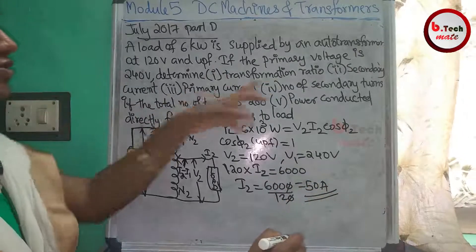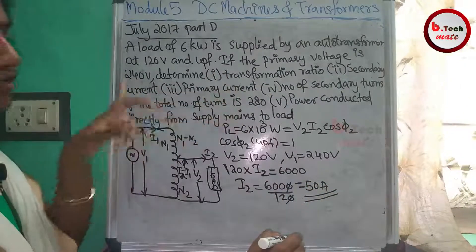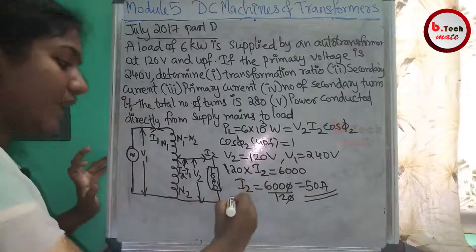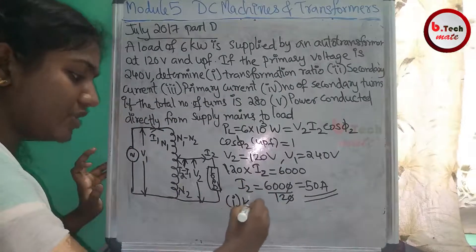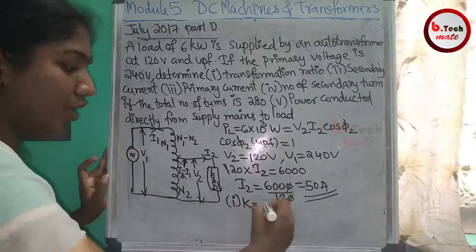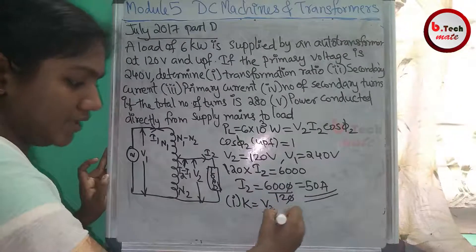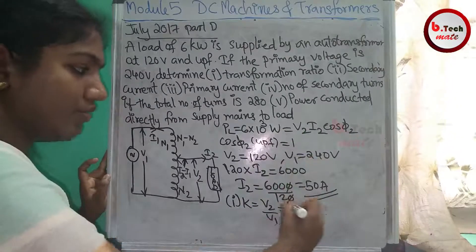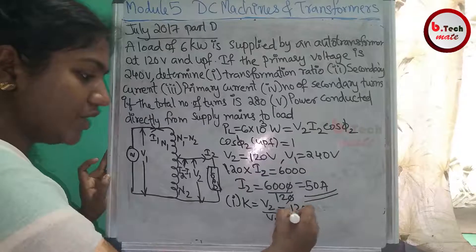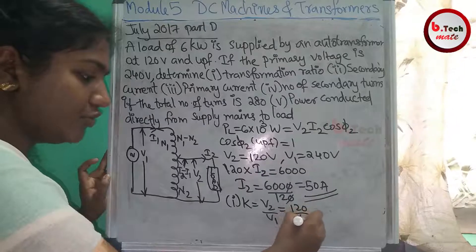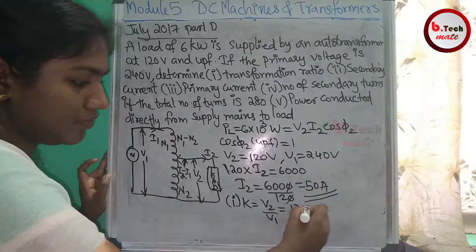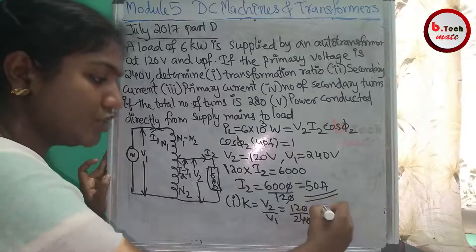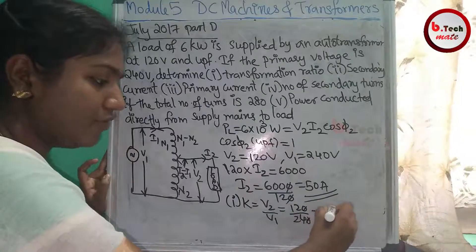First question: the transformation ratio k is equal to V2 divided by V1, which is 120 divided by 240, equal to 0.5.